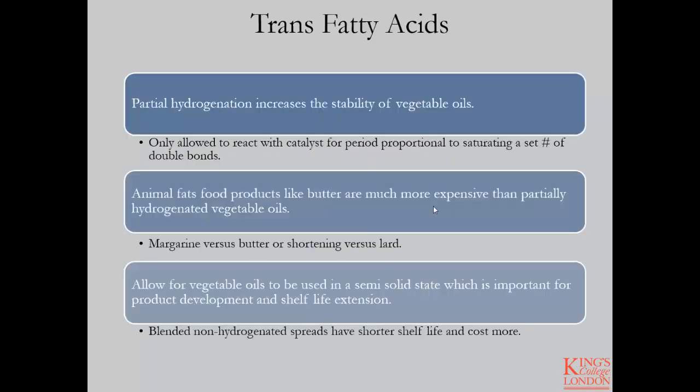Trans fats are formed during the process of partial hydrogenation, which increases the stability of vegetable oils, allowing production of vegetable-based fats with physical properties similar to animal fats but at a more economical rate. However, more recent public health epidemiological data and metabolic studies have shown that trans fatty acids are very detrimental and considered pro-atherogenic — even more so than the saturated components of animal fat products. It has been generally accepted that the health risks outweigh the benefits, and the food industry has moved away from partial hydrogenation, now looking more toward blending fats from natural sources.